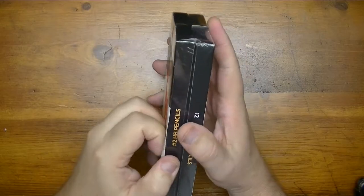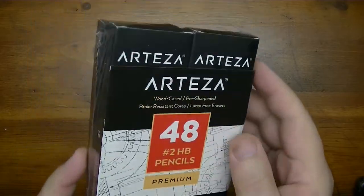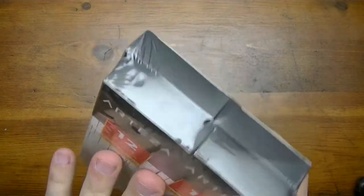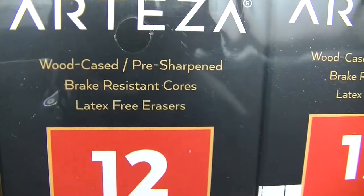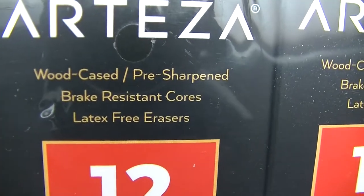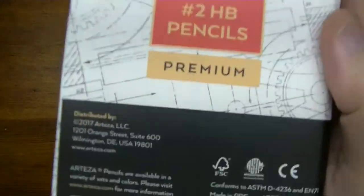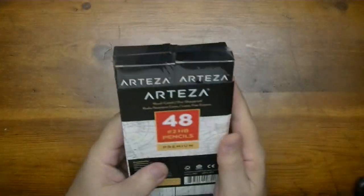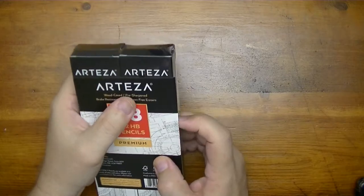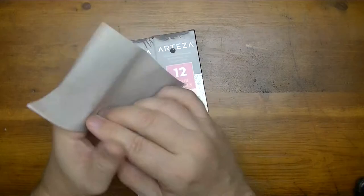Okay so it's time to rip this package open but before I do that I'm just going to give you a close-up of how it comes in the mail. It's just plastic wrapped, four boxes of 12. They're called premium and they say they're woodcase pre-sharpened, brake resistant cores, and latex free erasers. And I guess that's very important for anyone who's maybe allergic to latex. These are provided by Arteza. Rip that old sticky off. It's reusable. Yay!